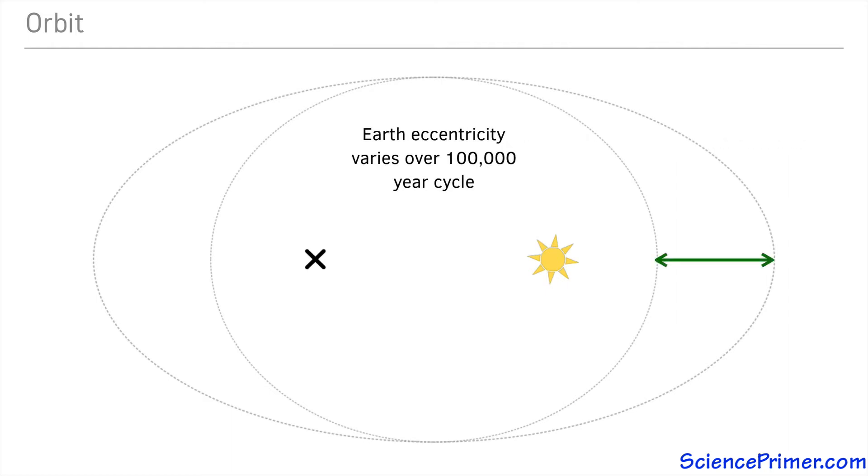Earth's eccentricity varies over a roughly 100,000 year cycle due to the gravitational pull of other planets altering its path over time. So the 4% difference from aphelion to perihelion is not consistent. It varies with changes in the planet's eccentricity.